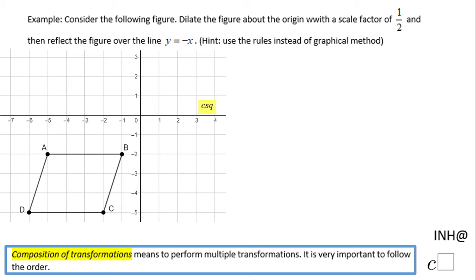Welcome or welcome back at I Need Help at C Square. In this example, we have a quadrilateral parallelogram, and we need to perform two transformations: one is a dilation with scale factor of one-half, and then a reflection over y equals negative x. As I said, use the rules instead of a graphical method, especially because of that dilation which is not very friendly. So let's see what I meant.